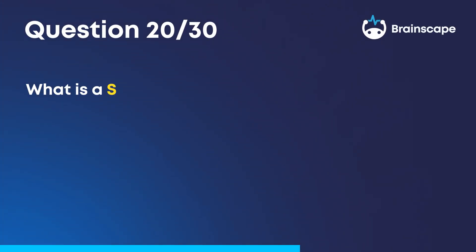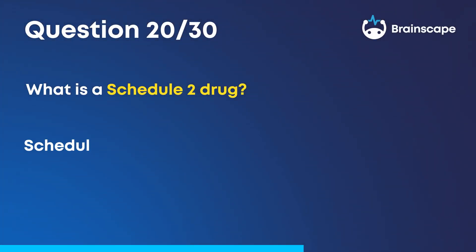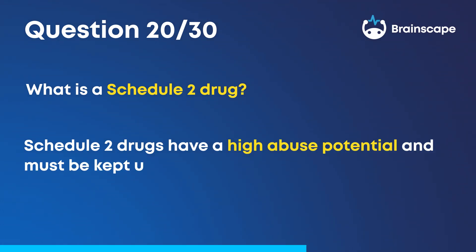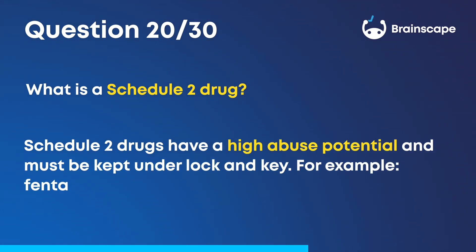Question 20. What is a Schedule II drug? Schedule II drugs have a high abuse potential and must be kept under lock and key. For example, fentanyl and cocaine.